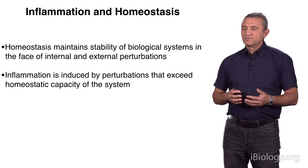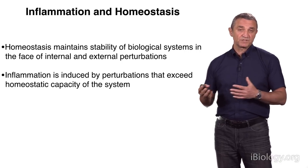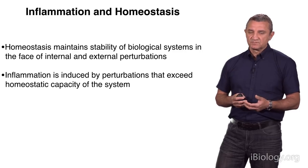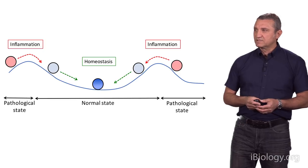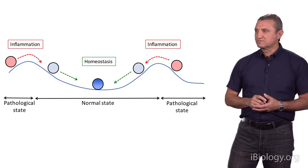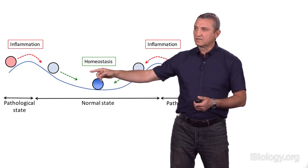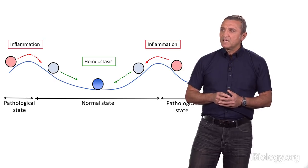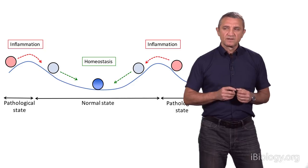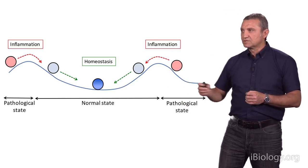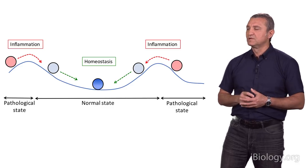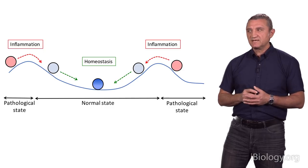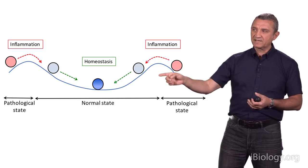Homeostasis maintains stability of biological systems in the face of perturbations. Perturbations could be either external or internal to the system. Inflammation is induced when these perturbations exceed homeostatic capacity of the system. Schematically, if we imagine the position of a ball as the state of the system, in the normal state homeostasis is maintained by keeping the state of the system in the desired position. When it deviates from that position, homeostatic mechanisms will bring it back. But if perturbation is large enough and the system goes outside of its normal homeostatic range, then homeostatic capacity is no longer sufficient to keep the system in the desired state. That's when inflammation is induced to force the system back into the homeostatic state.